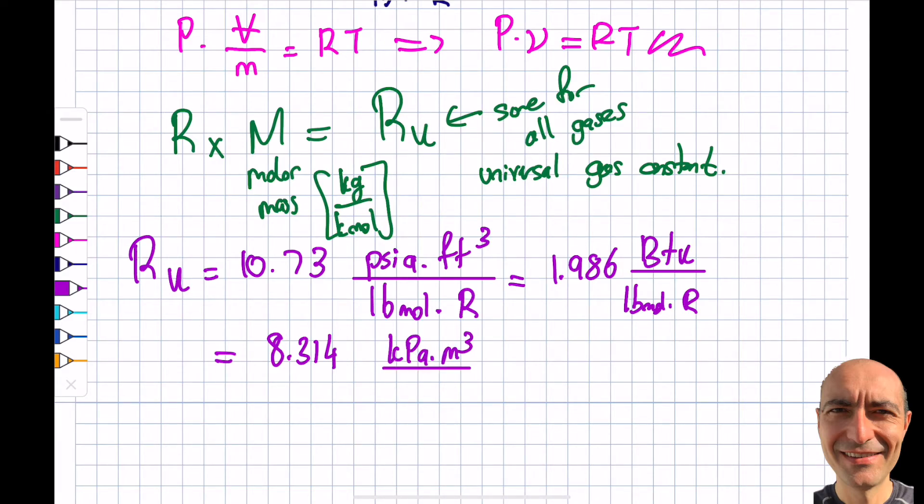If I'm using SI, then this can be 8.314 kPa·m³/(kmol·K). By the way, Pascal times meter cubed - what is Pascal times meter cubed? Newton per meter squared is Pascal, times meter cubed, so you can see newton-meters, that is unit joules. So you can write this as, if you choose to, kJ/(kmol·K) as well.